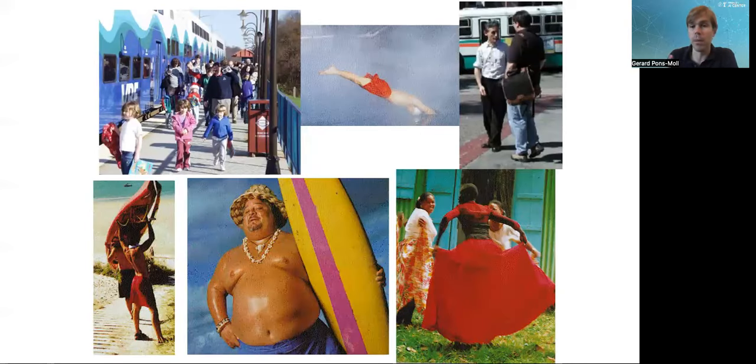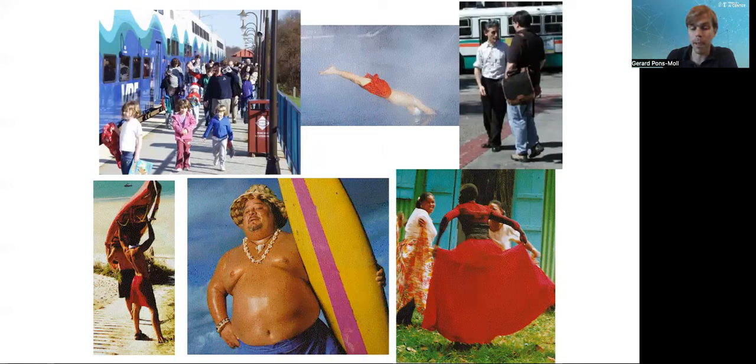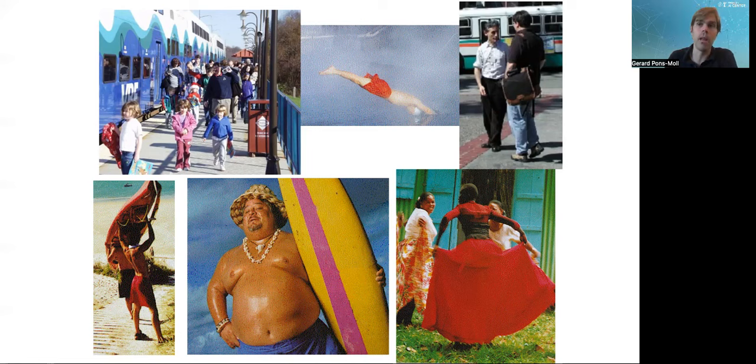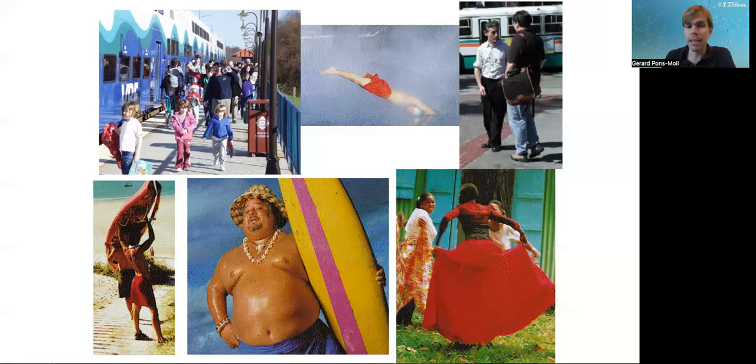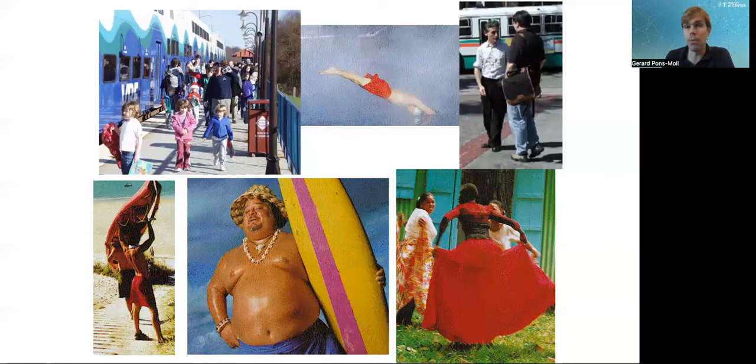You have different shapes of people, like kids or people that are thinner, people that are heavier. You can have all sorts of lighting conditions, different clothing. Estimating people under clothing is challenging. So modeling people from visual data is a really, really challenging problem. This has been a core problem in computer vision for many years.